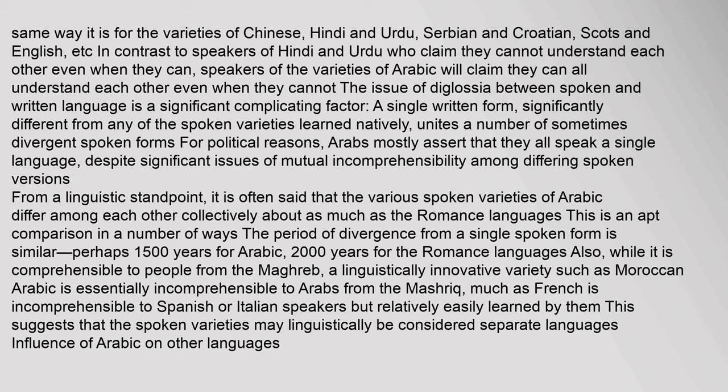The issue of diglossia between spoken and written language is a significant complicating factor. A single written form, significantly different from any of the spoken varieties learned natively, unites a number of sometimes divergent spoken forms. It is often said that the various spoken varieties of Arabic differ among each other collectively about as much as the Romance languages. The period of divergence from a single spoken form is similar — perhaps 1,500 years for Arabic, 2,000 years for the Romance languages. A linguistically innovative variety such as Moroccan Arabic is essentially incomprehensible to Arabs from the Mashriq, much as French is incomprehensible to Spanish or Italian speakers.